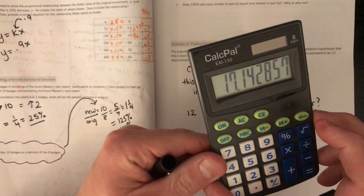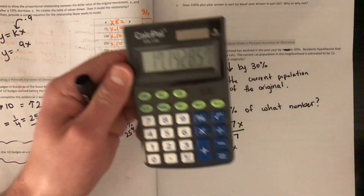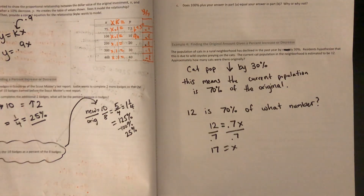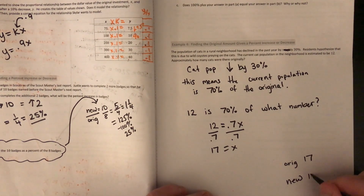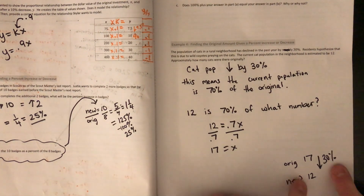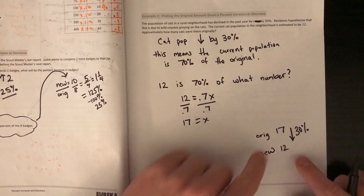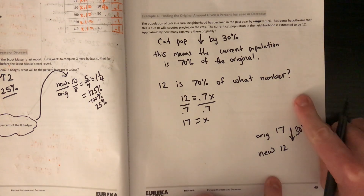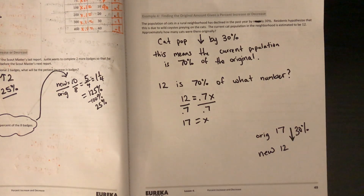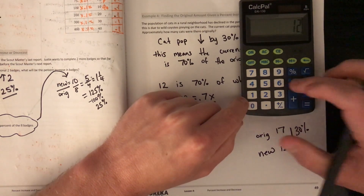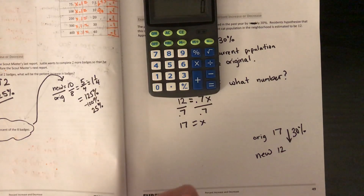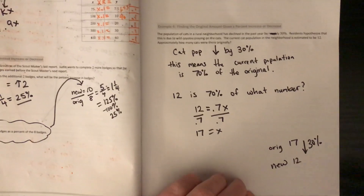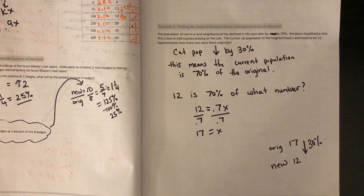12 divided by 0.7 is approximately 17.14 — you can't have 0.14 of a cat, so let's round to 17. Now, 30 percent of the original 17 is approximately 5. But if you try working backwards from 12 by taking 30% of 12, you get 3.6, and 12 plus 3.6 does not get you back to 17. You can't use a percent of an original number when you don't know the original number.